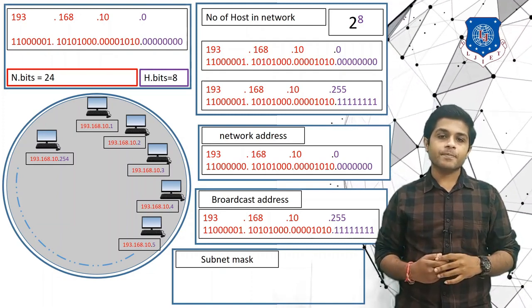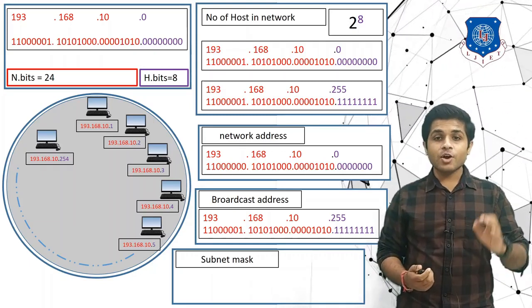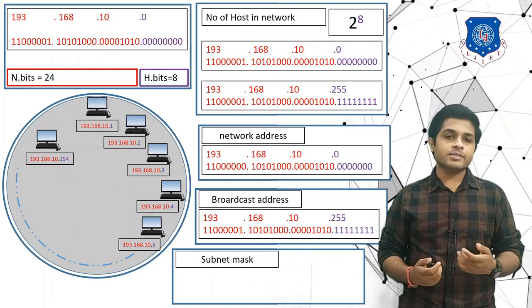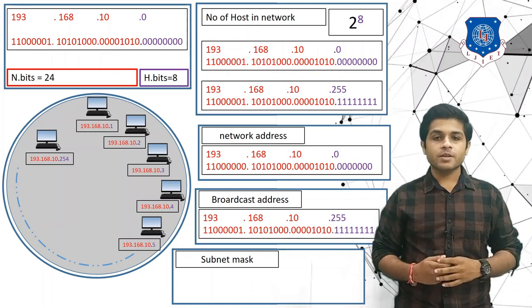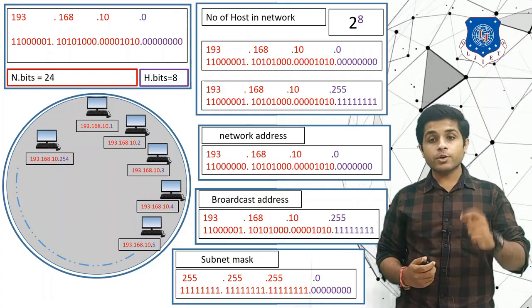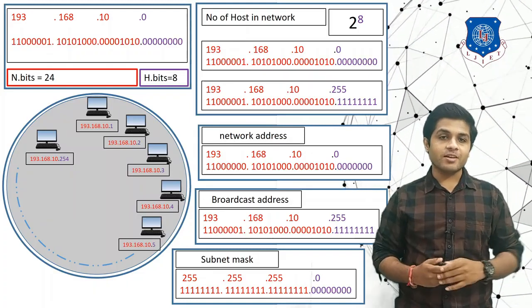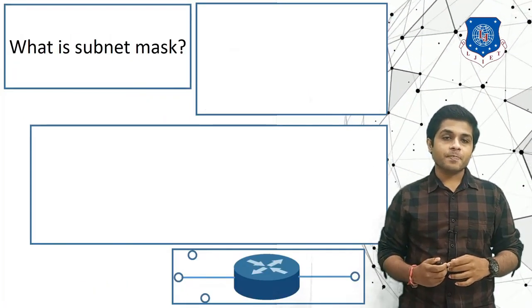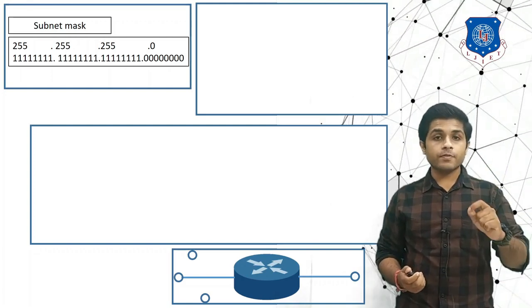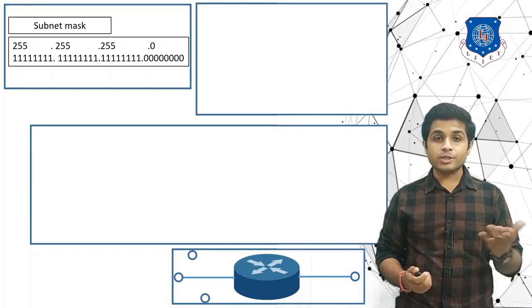To find the subnet mask, set all the network bits to 1 and all the host bits to 0. You get 255.255.255.0, which is the subnet mask for Class C.